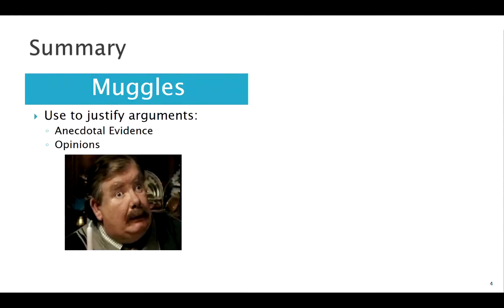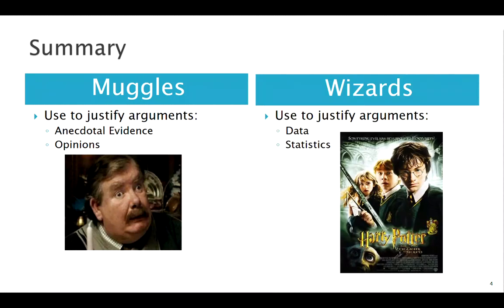Let's sum all that up. For any Harry Potter fans, the way your common muggle might justify an argument is using some anecdotal evidence - 'my friend did this' or 'my friend's cousin' - or their own opinion. Everyone's entitled to their own opinion, but sometimes we want to make sure we have some sort of data to back that up. Instead of muggles, we want to be wizards. We want to use data and statistics to back up our arguments.